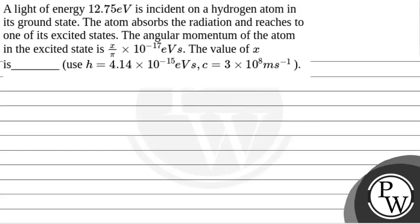Hello Achor. Let's read the question. The question says that a light of energy 12.75 electron volts is incident on a hydrogen atom in its ground state. The atom absorbs the radiation and reaches to one of its excited states. The angular momentum of the atom in the excited state is x/π × 10^-17 electron volt seconds. The value of x is... Given h = 4.14 × 10^-15 electron volt seconds and c = 3 × 10^8 meters per second.